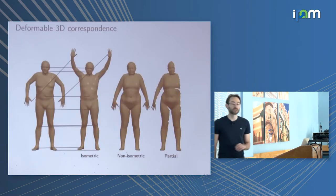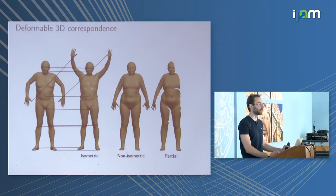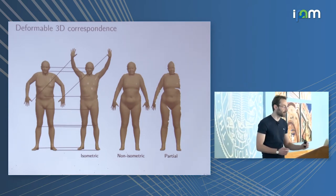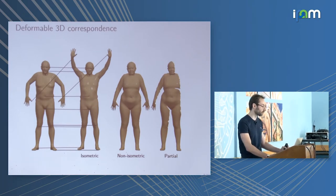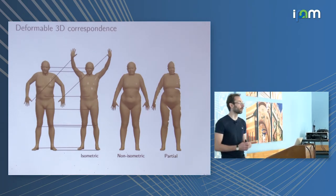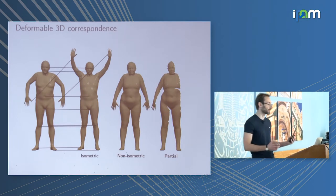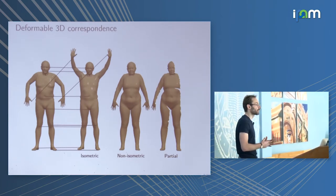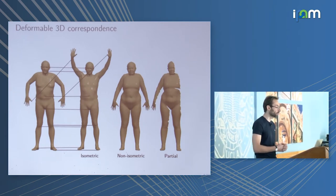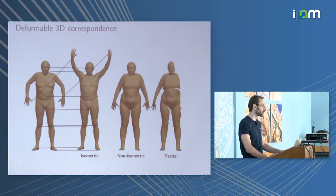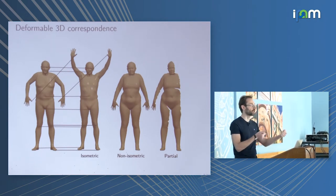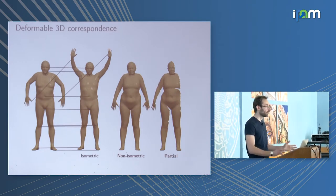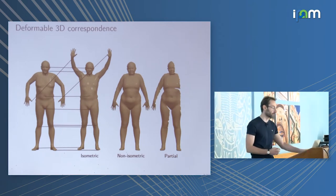In computer graphics and geometry processing, the correspondence problem is very well studied, and several people in this room have introduced fundamental solutions to it. The shape is usually modeled as a manifold, or in the discrete setting as a mesh. There are mathematical models of invariants that can be incorporated into this problem. For example, if we allow the shape to deform isometrically — without stretching the surface or changing its intrinsic structure — we can say a lot about how to find the correspondence.